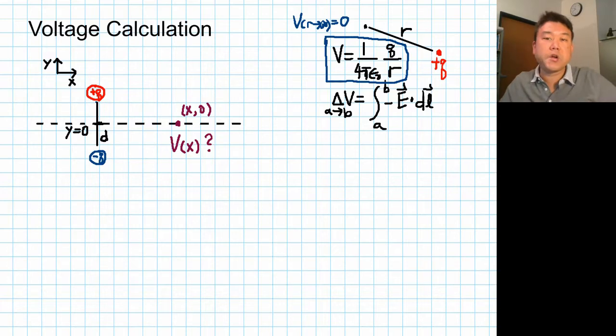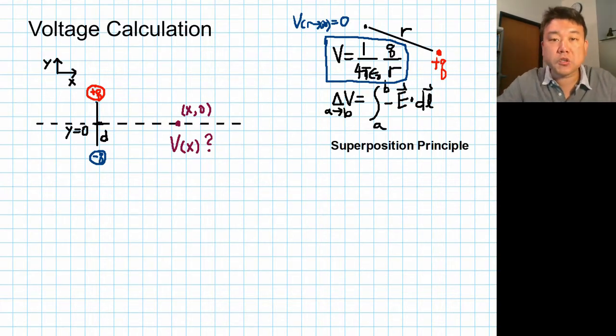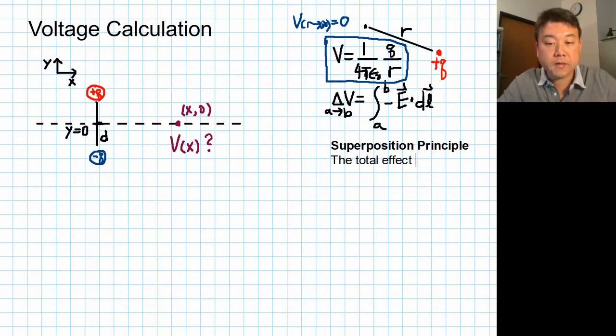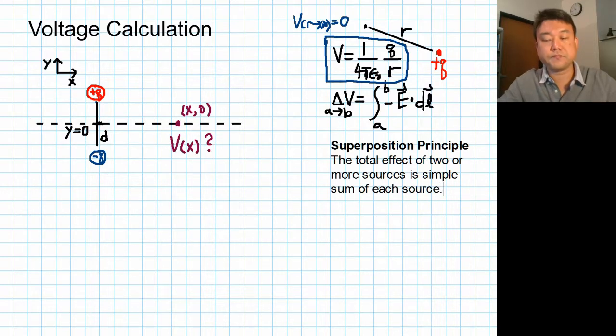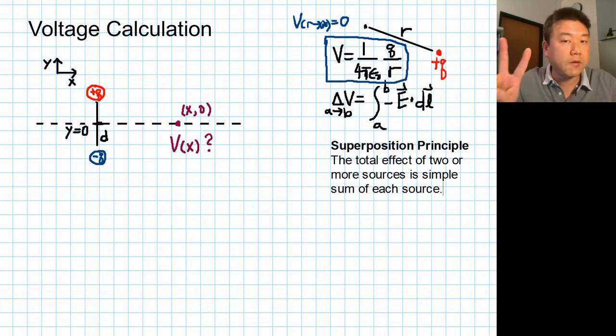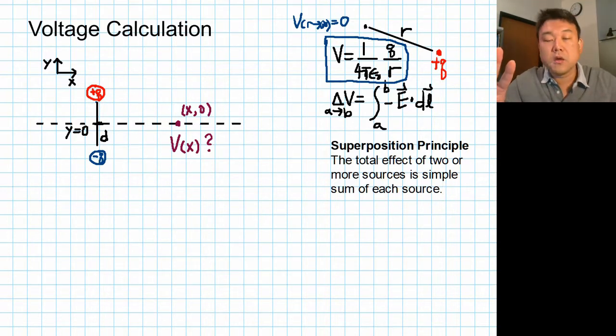So we do this calculation using superposition principle. As a reminder, this is what superposition principle means. The superposition principle says the total effect of two or more sources is simple sum of each source. I'm keeping this general because superposition principle is a general principle. It applies to forces. We are implicitly using it in physics for a while. It applies with waves. That's the first time when we actually started mentioning this. And it's effective with electric field. And now we are saying that it also works for voltages. So it's a very general principle. And where superposition principle really comes from is what we call linearity. All these different things that superposition principle applies, these are linear effects.